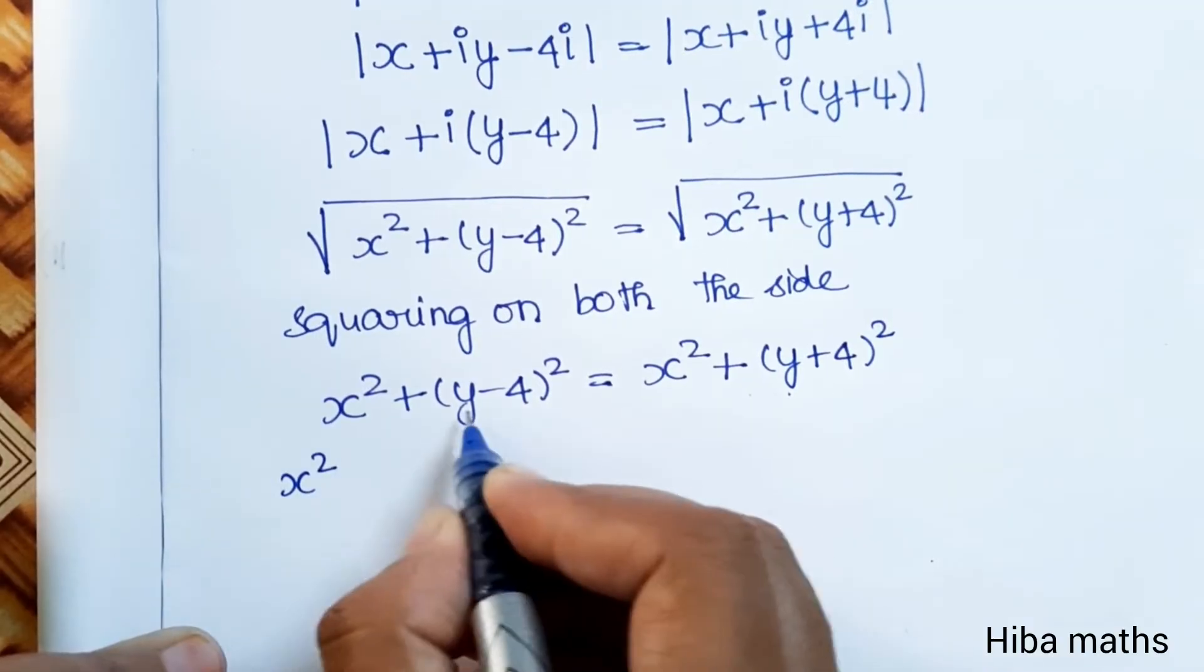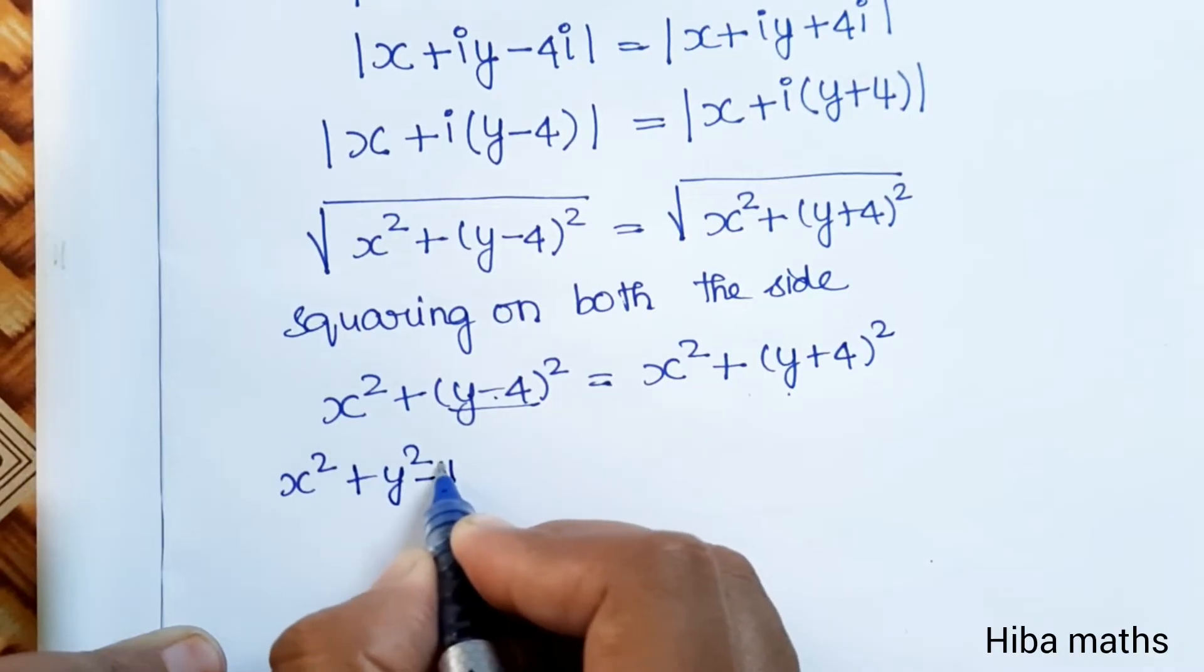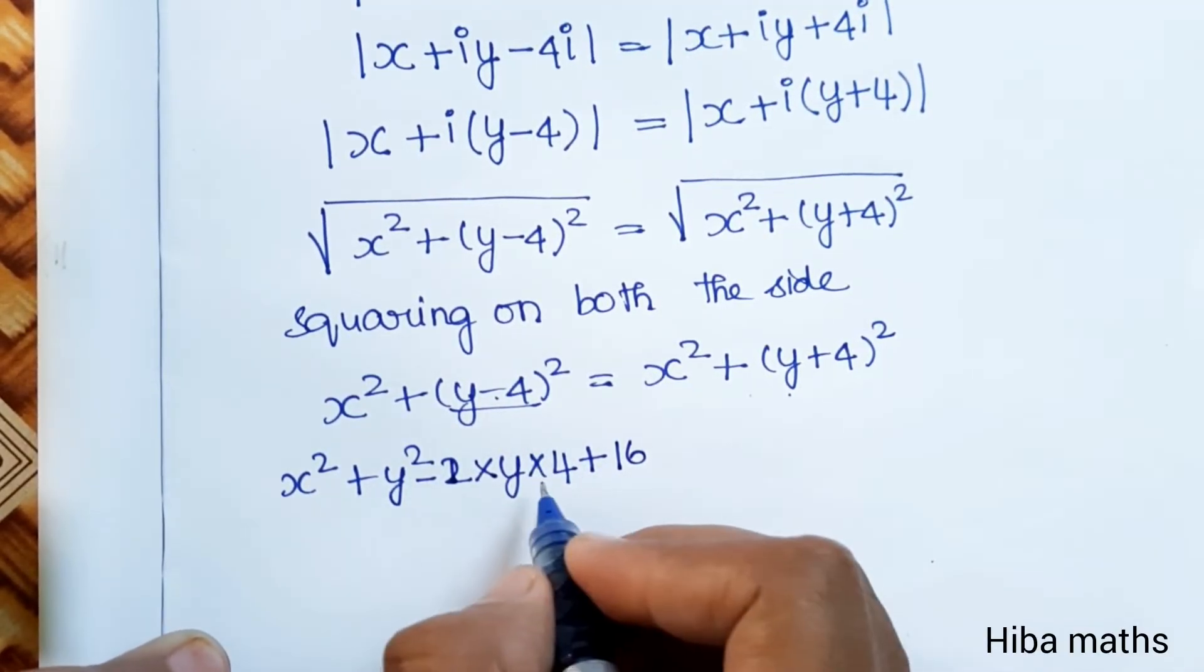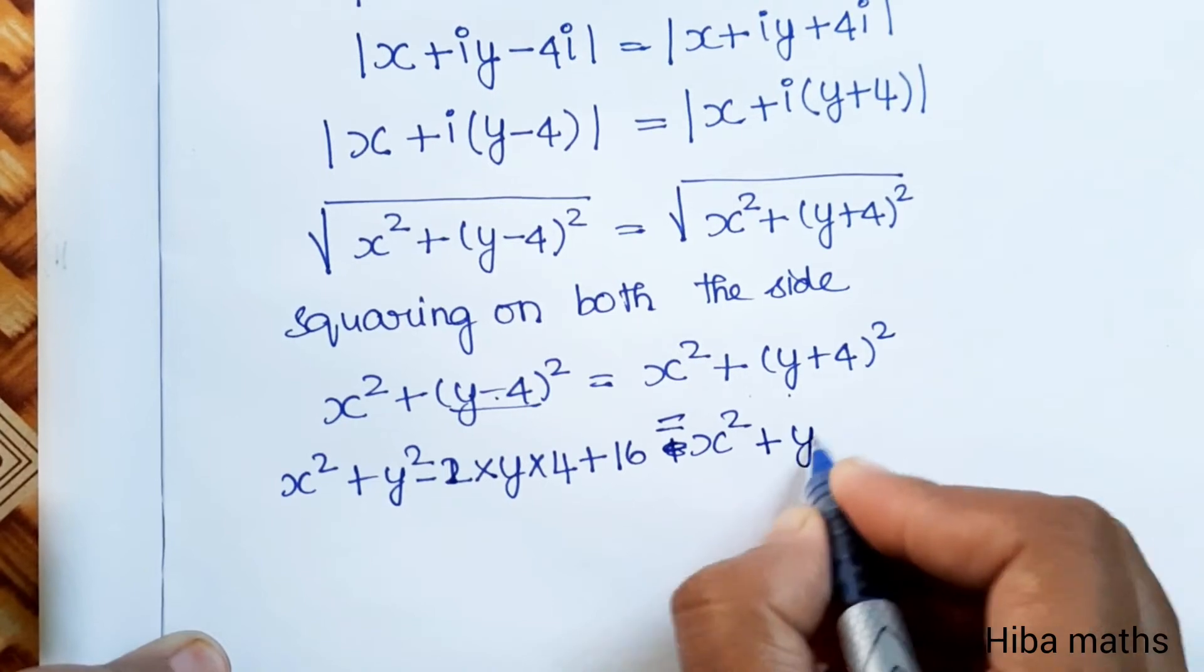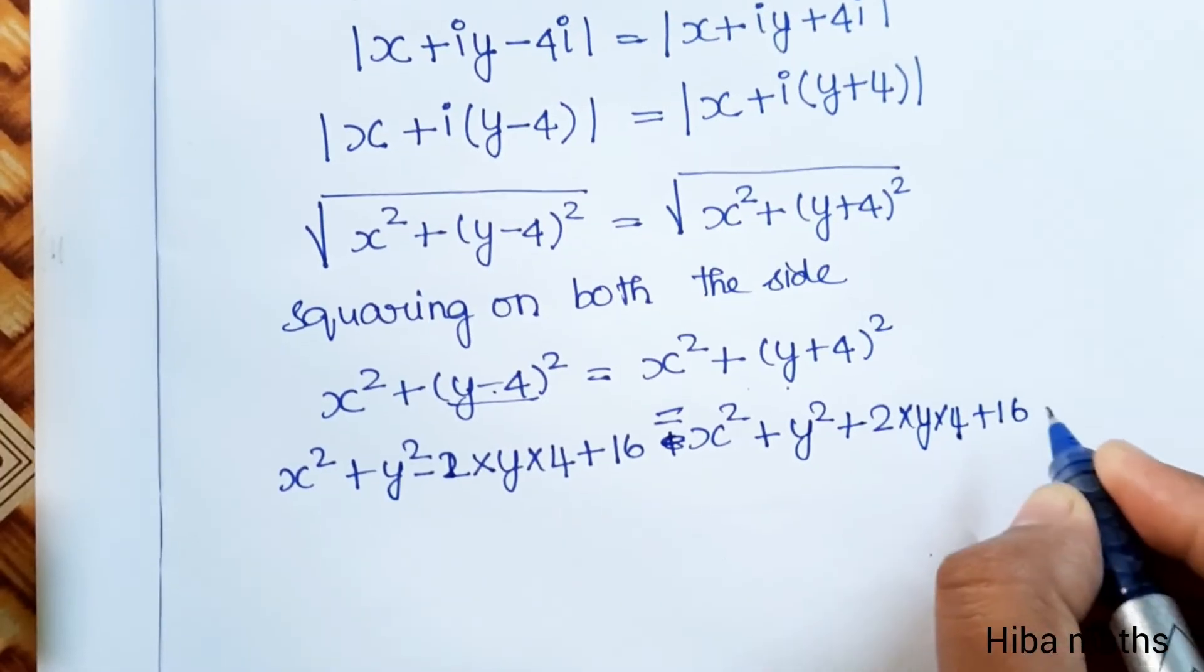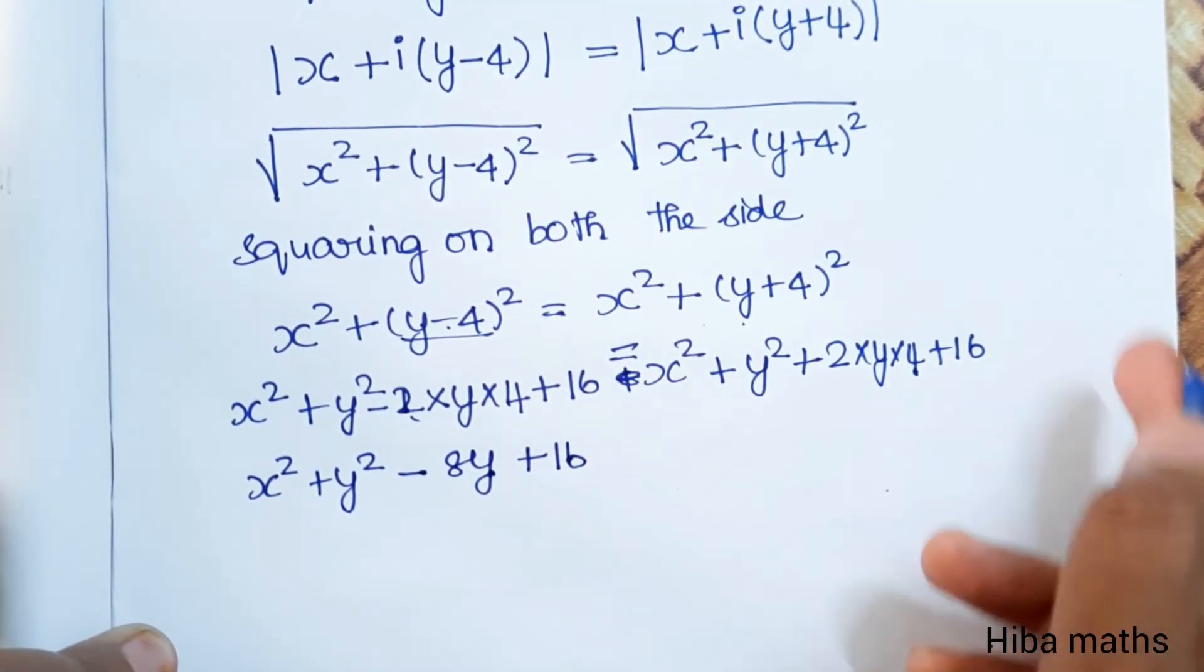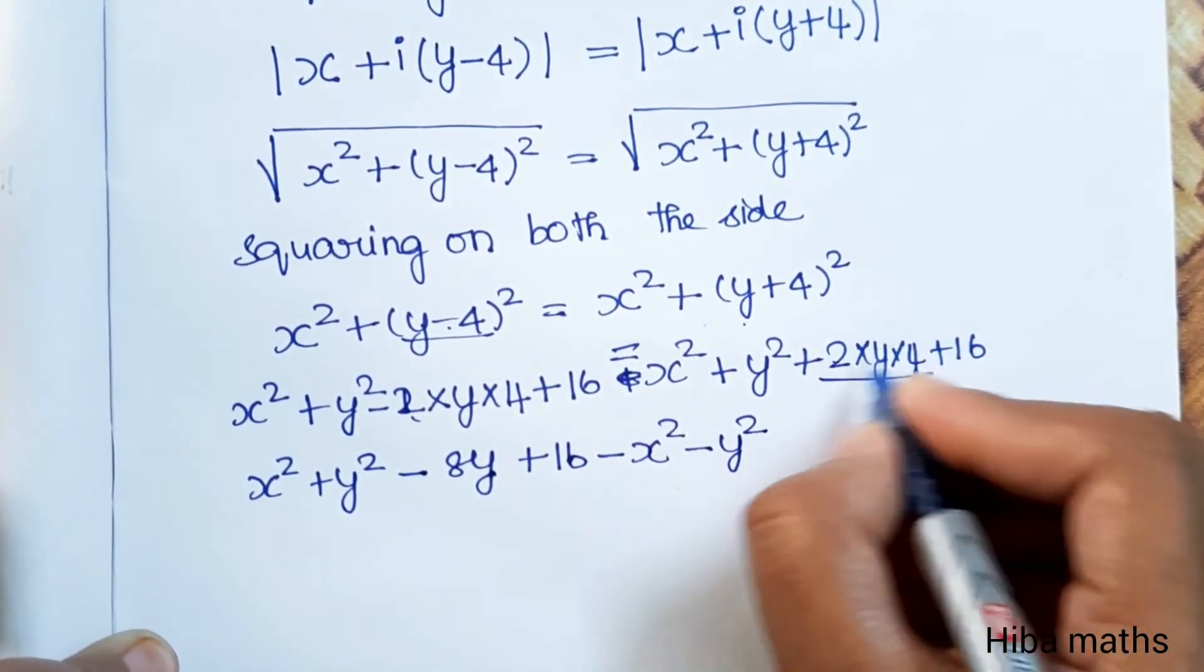x squared plus a minus b whole squared: a squared minus 2ab plus b squared equals 16. This is also x squared plus y squared plus 2ab plus b squared equals 16. So x squared plus y squared minus 8y plus 16 equals x squared plus y squared plus 8y plus 16.